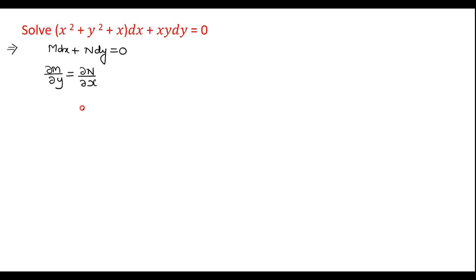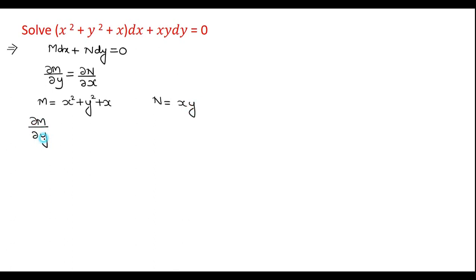Before we go for those integrating factors, let me check whether the given differential equation is exact or not. I am verifying for exactness because it is given in the form M dx + N dy = 0. On comparing, M = x² + y² + x and N = xy. Now ∂M/∂y means the partial derivative of M with respect to y.